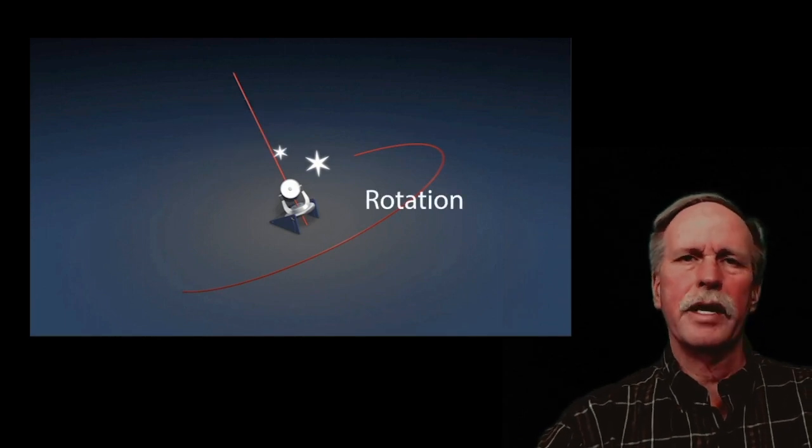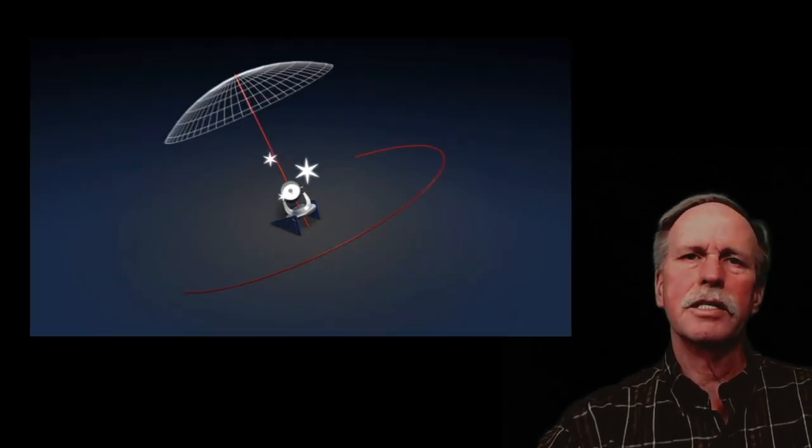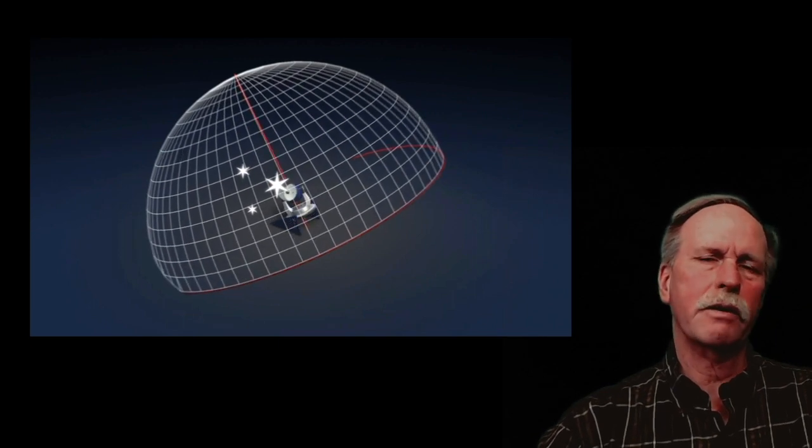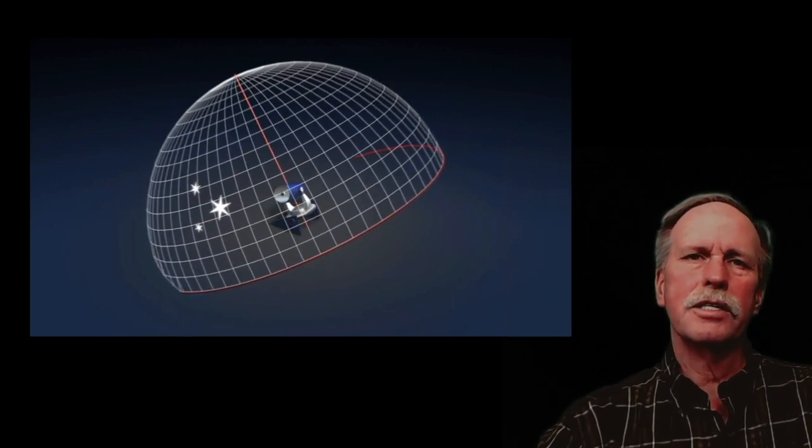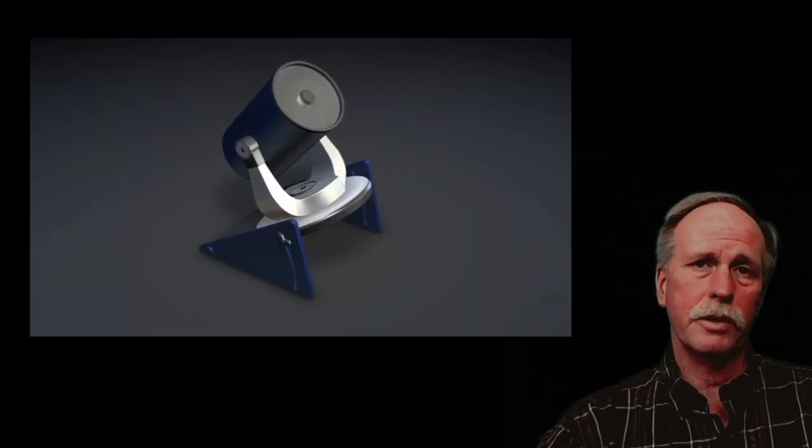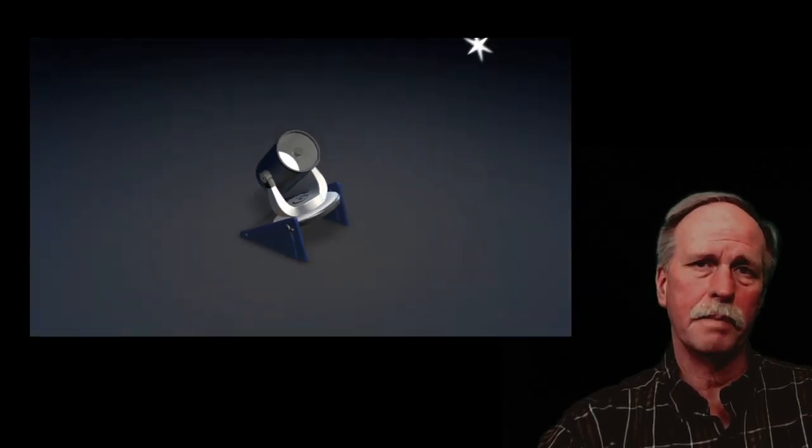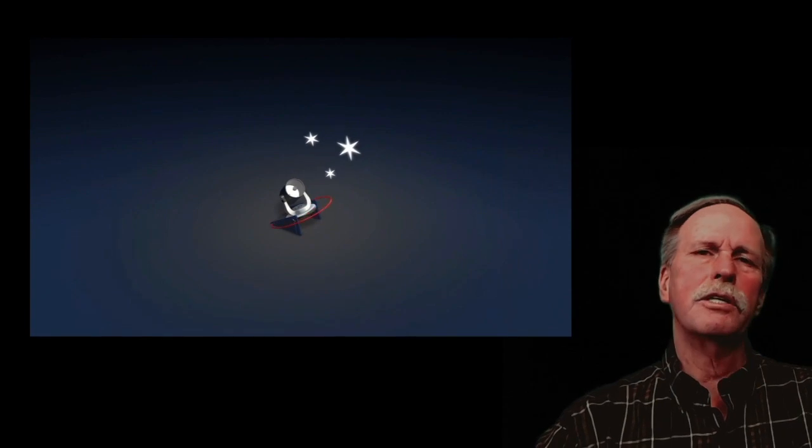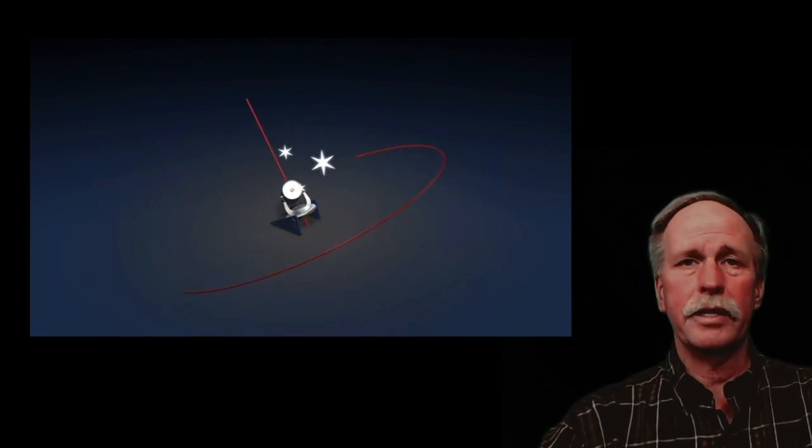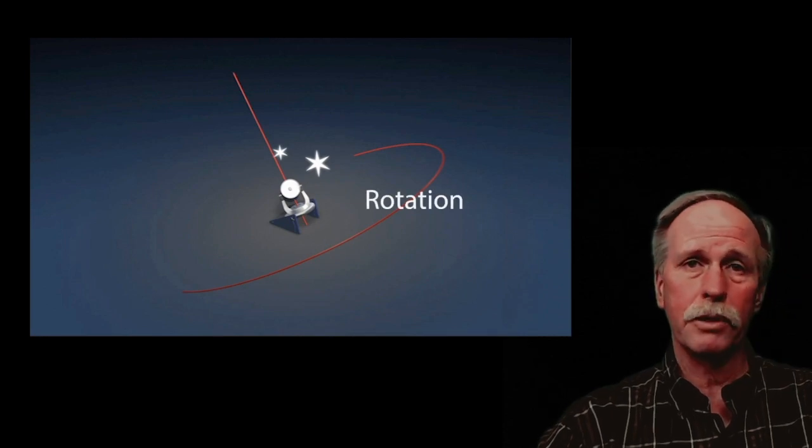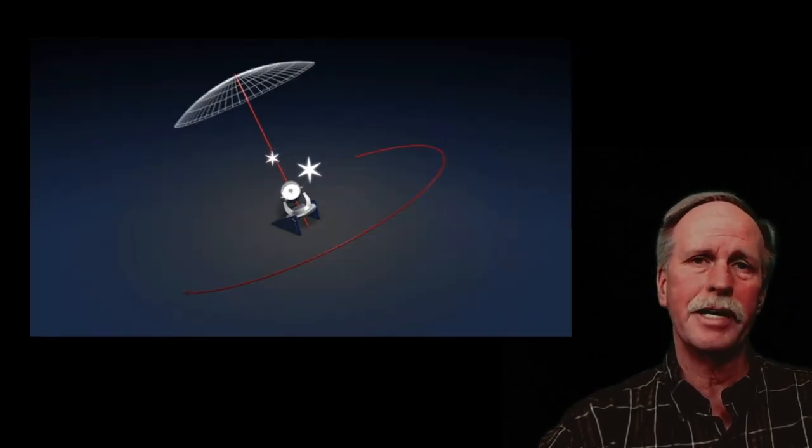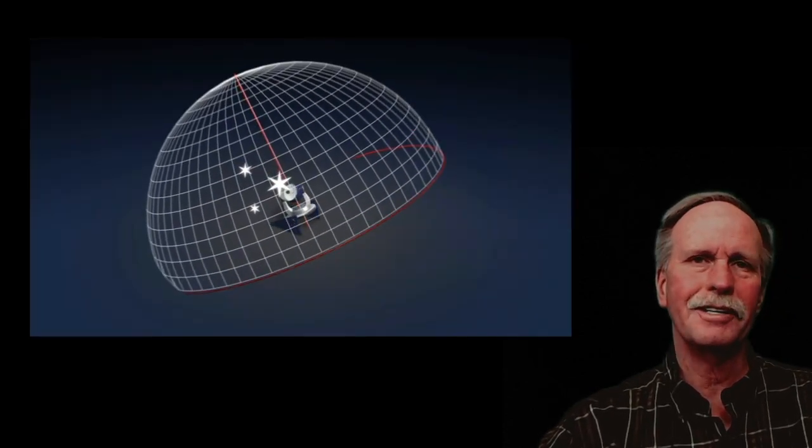Now one of the biggest advantages we have in backyard astronomy is the existence of what are called German equatorial mounts or equatorial mounts. This allows us to follow stars as they rotate through the sky as the earth rotates beneath them. Now in order to do that we have to polar align these mounts. So today I'm going to take a moment and show you how to polar align a German equatorial mount.